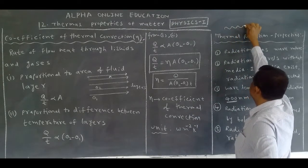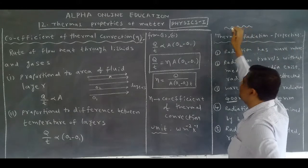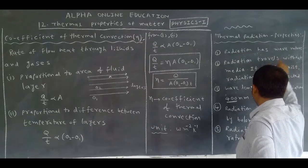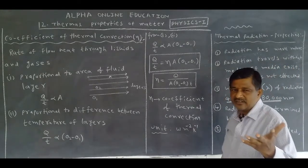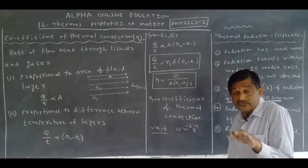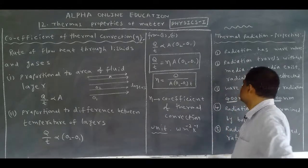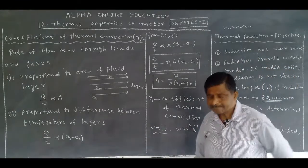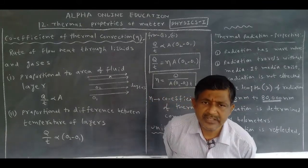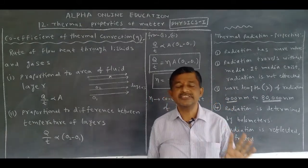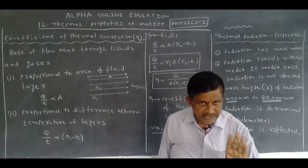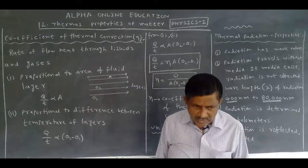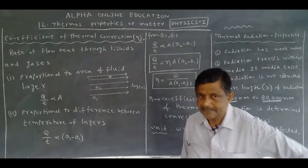Second property: radiation travels without any medium. A medium is not required for radiation to travel. Even if a medium exists, radiation is not affected by it. Radiation travels in the form of a wave and does not require a medium.